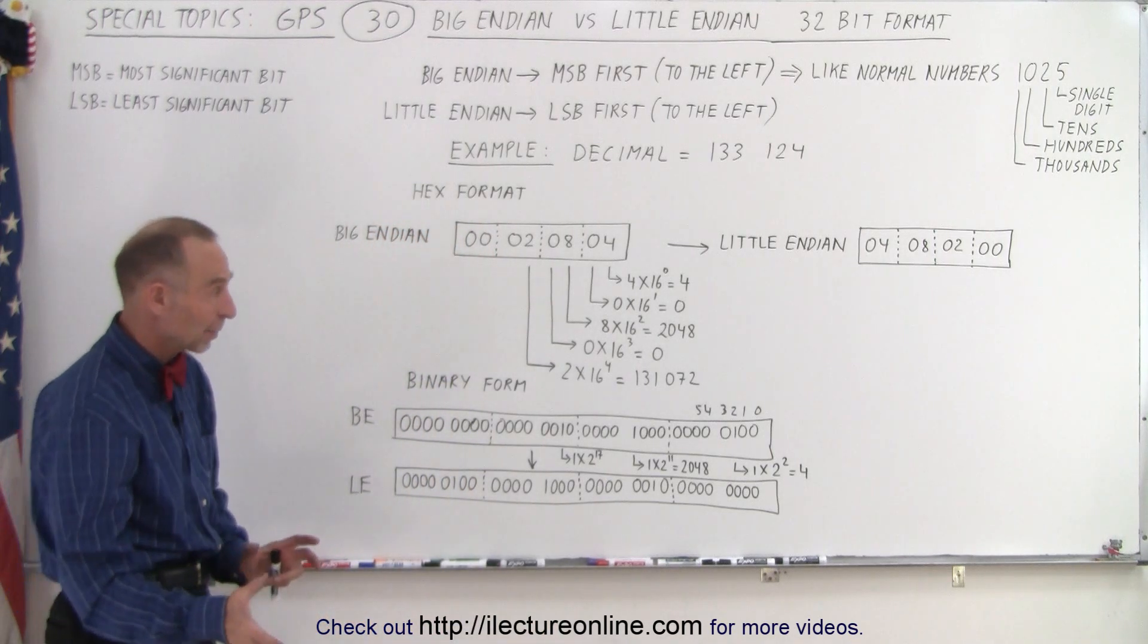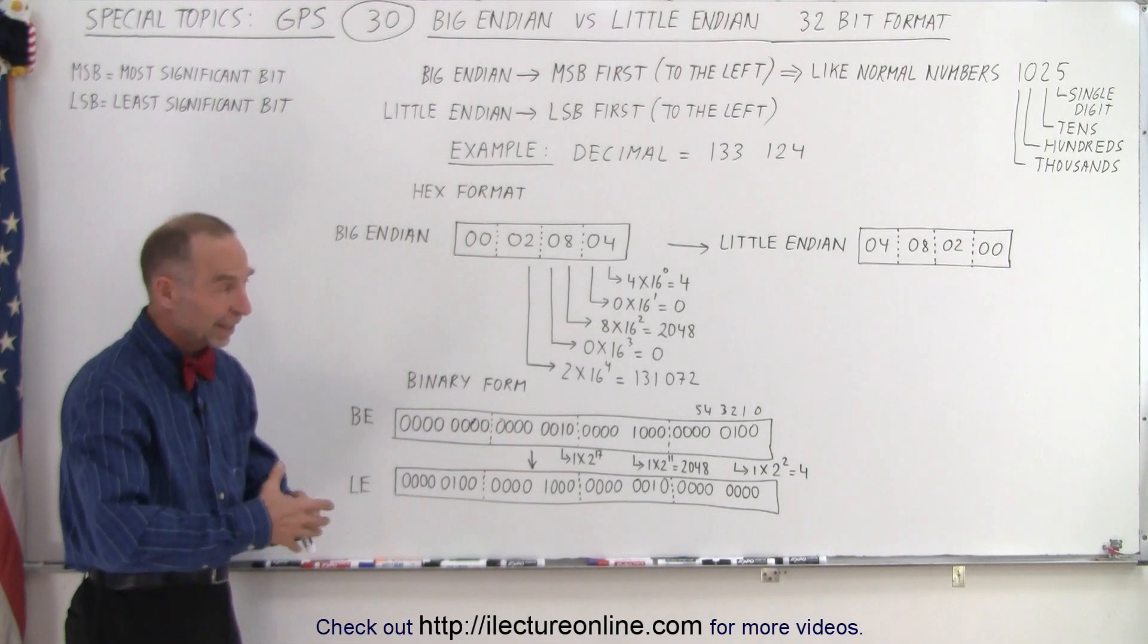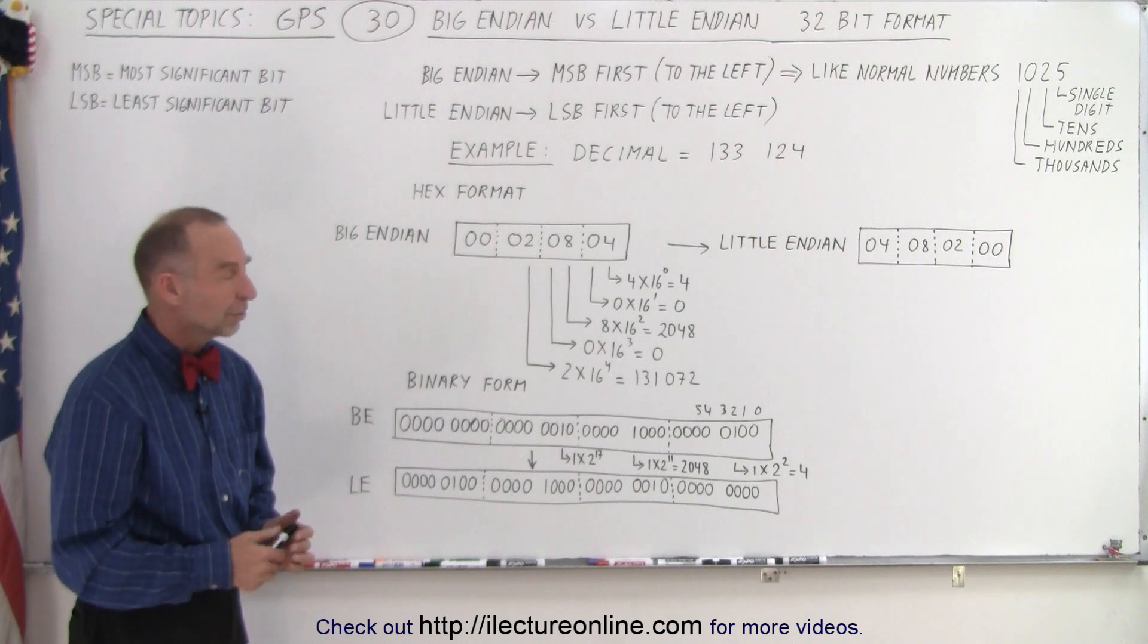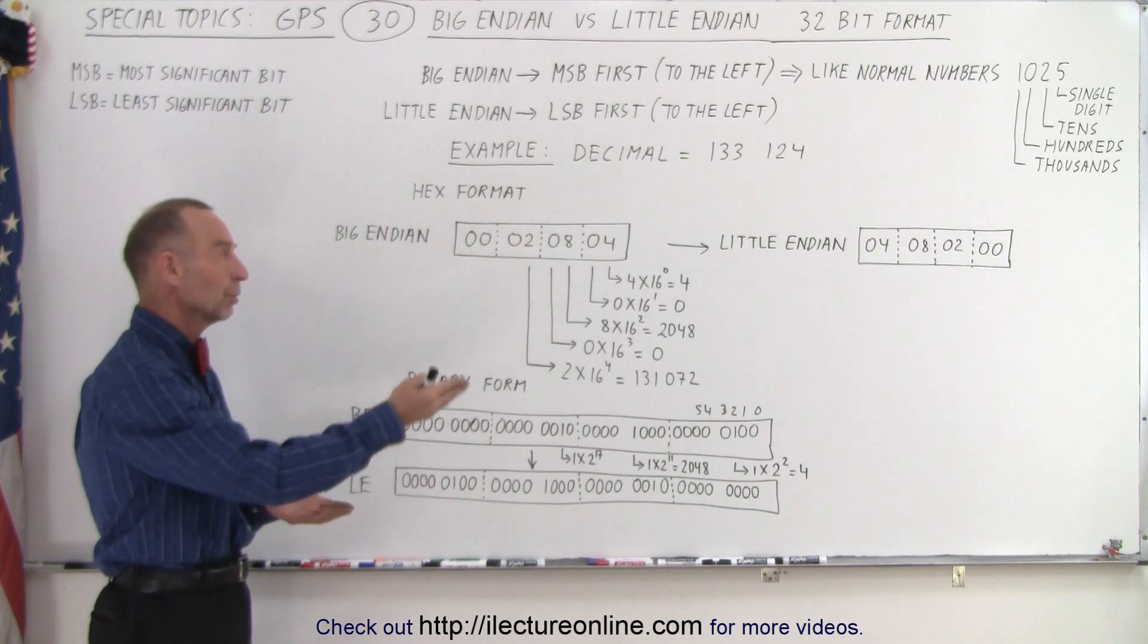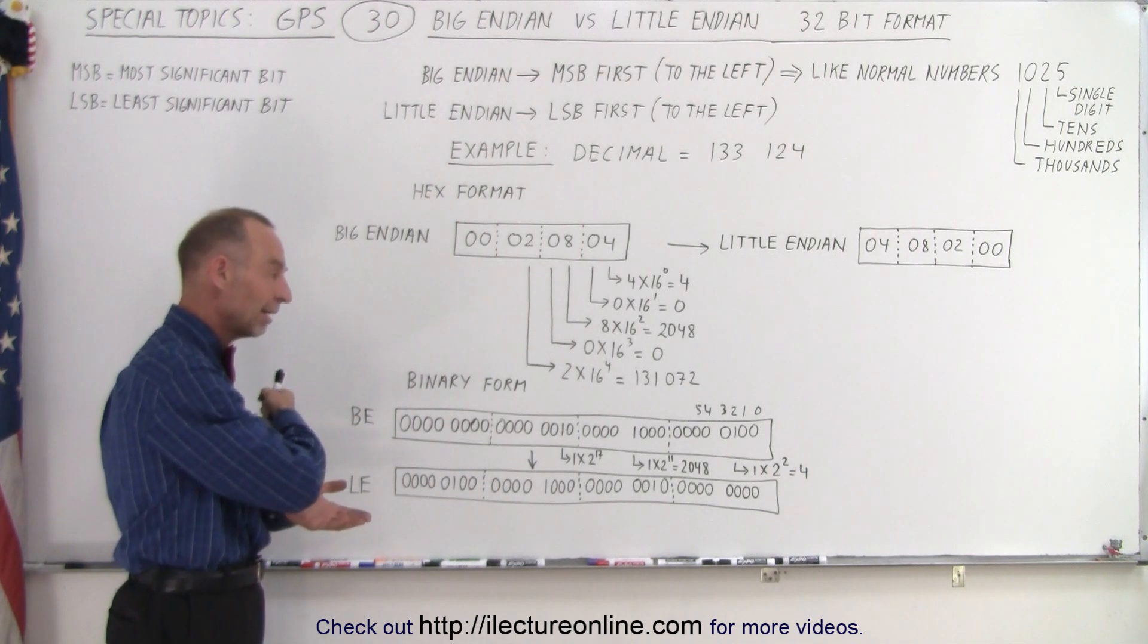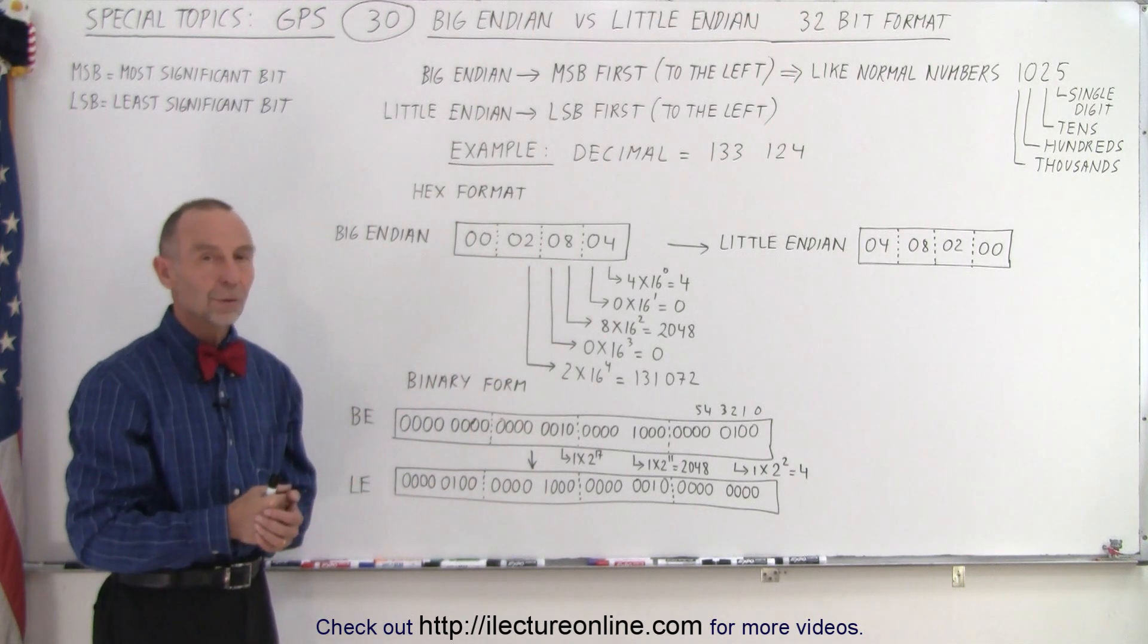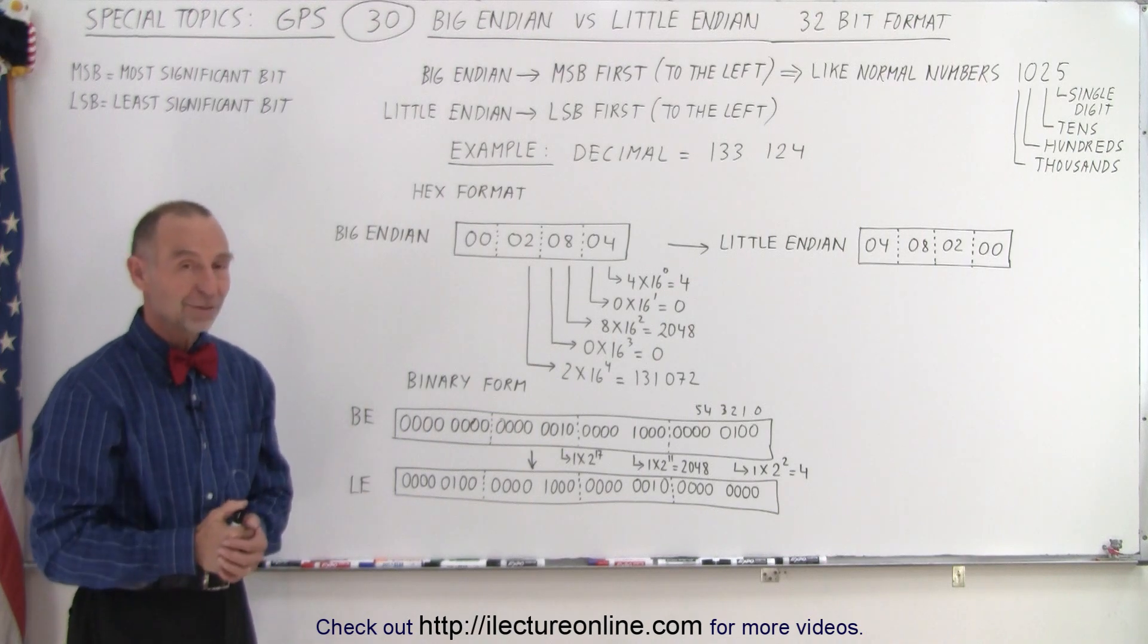So again you can see how we convert from big Endian to little Endian. At this point that's now easy to do. But remember GPS we always have everything in big Endian format with the most significant bit to the left and the least significant bit to the right. And that is how it's done.